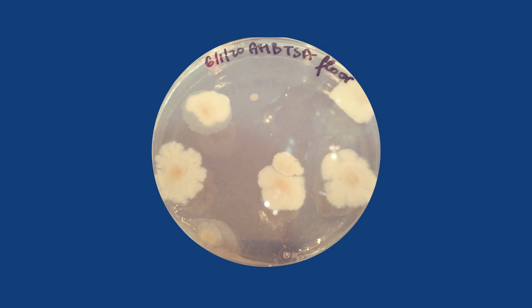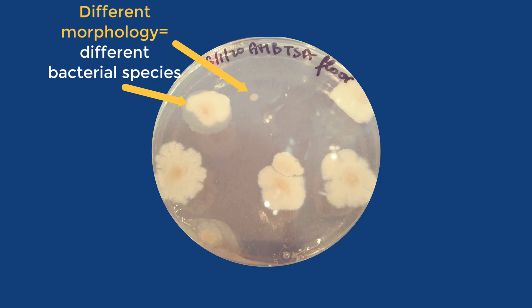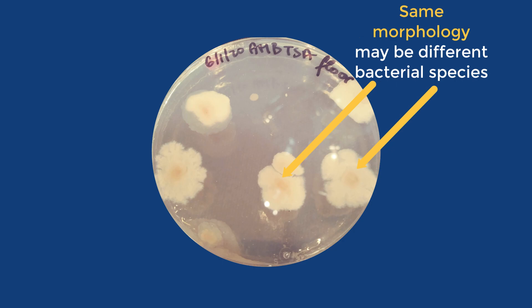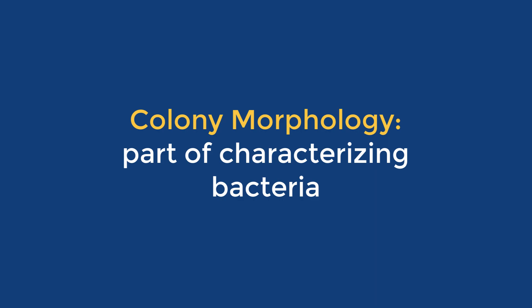Colonies that look different on a plate belong to different species of bacteria, but even colonies that look identical on a plate may belong to different species. Describing colony morphology is just one tiny part of characterizing bacteria.